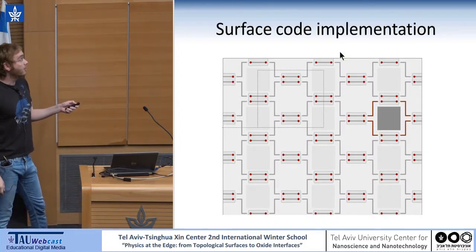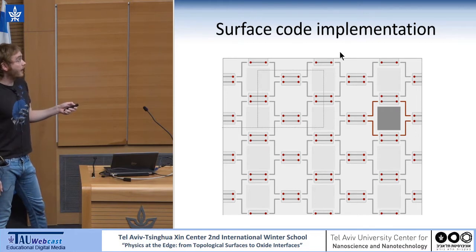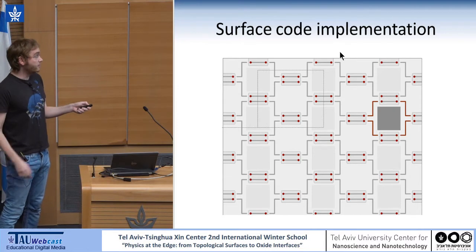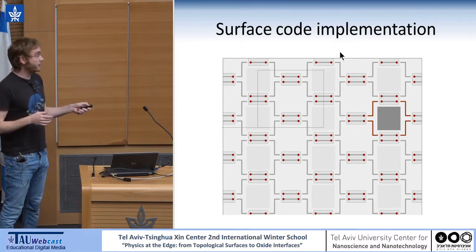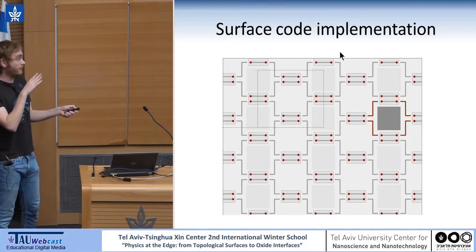What we see here: these boxes are superconducting islands. In each island, we have two quantum wires, and all of these islands are coupled to each other. This gray square denotes a group of four islands. I will come back to this later.